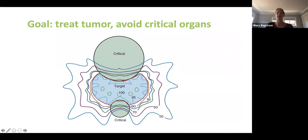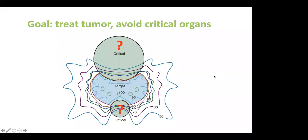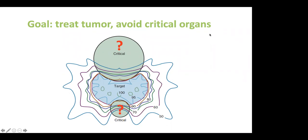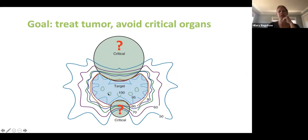The treatment head contains MLCs — multi-leaf collimators — that allow us to modulate the beam as it comes out to get different dose distributions, avoid critical organs, and target the organ we want to treat. For the prostate in the pelvis, the critical nearby organs are the bladder anteriorly and the rectum posteriorly — those are the two main ones we need to avoid.